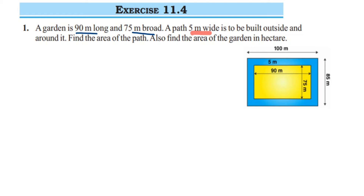We have not been given the length including the path — we only know 90 meters for the garden, 5 meters on the right side, and 5 meters on the left side. So 5 plus 5 is 10, and 90 plus 10 gives us 100 meters. So the whole length becomes 100 meters.